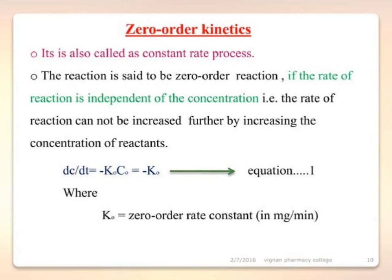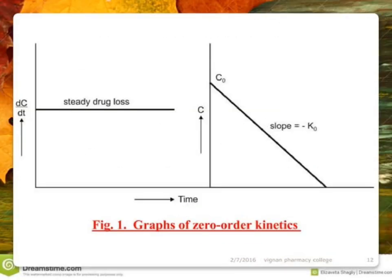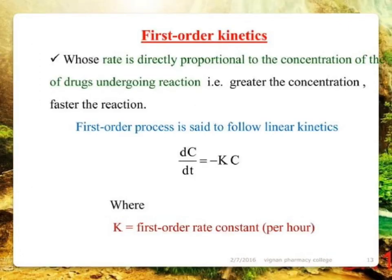Rearrangement of the zero order equation yields: dC = k·dt. Integration gives: C = C0 − k·t, where C0 is the concentration of drug at t = 0 and C is the concentration of drug remaining at time t. A graph of drug concentration versus time for zero order kinetics shows a linear decline with slope equal to −k.